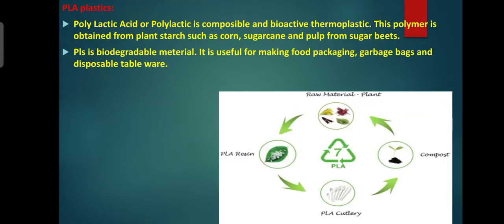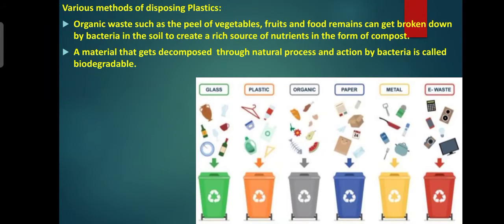Various methods of disposing plastics — plastics are everywhere. Our increasing consumption and the problem of plastic waste needs a solution. Let us find out more about how and where plastic waste is disposed of, and the better methods of disposing plastic. Organic waste such as peels of vegetables, fruits, and food remains can get broken down by bacteria in the soil to create a rich source of nutrients in the form of compost.